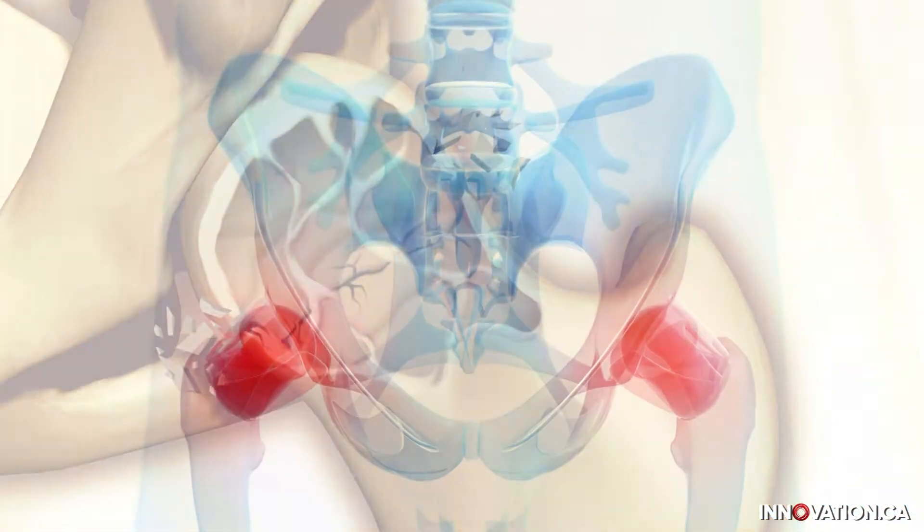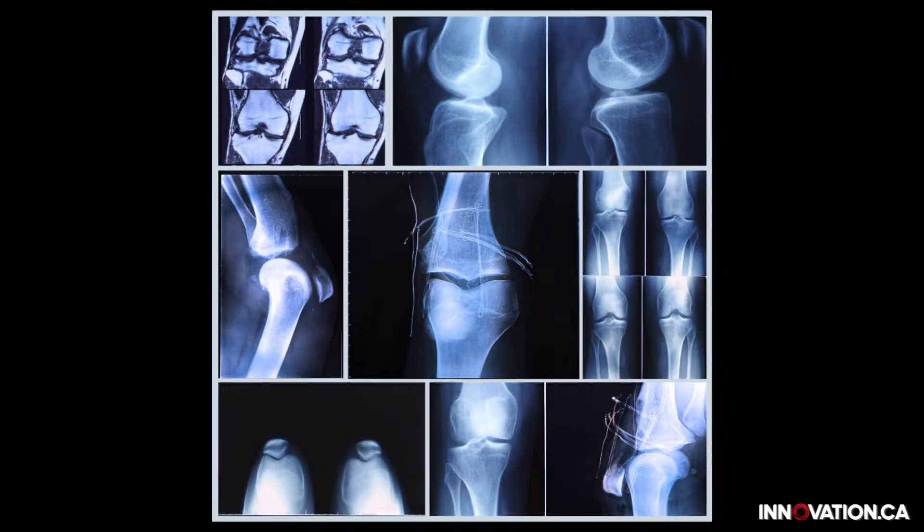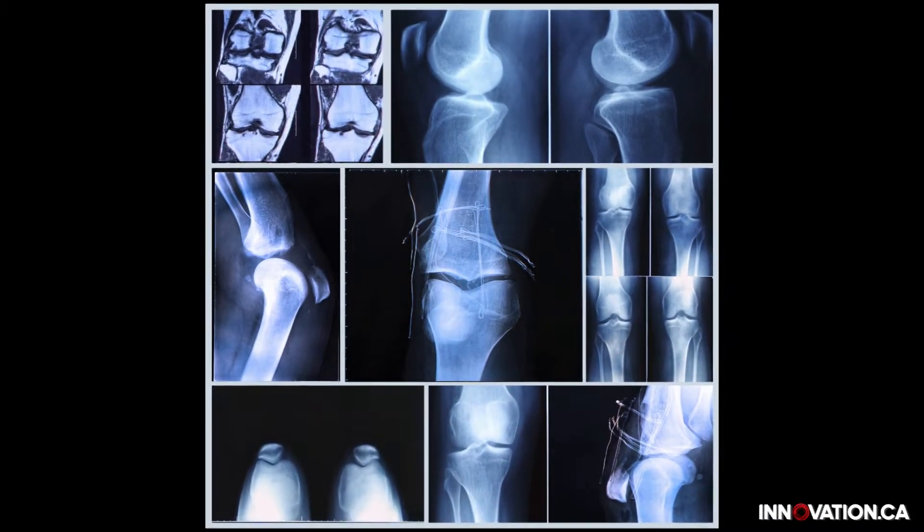For example, our skin starts getting wrinkled, bones break more easily, we develop arthritis. Various changes in our collagen tissues happen, and this can actually be associated with some chemical changes that are going on in the collagen.